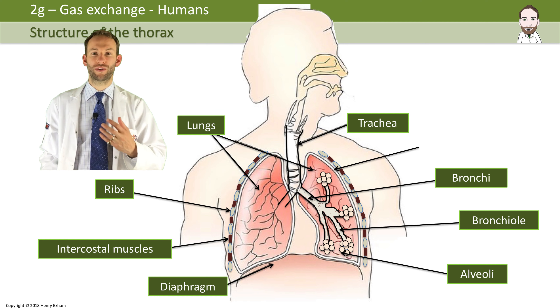Surrounding the whole chest cavity — the thorax — are the pleural membranes, which make a complete airtight seal. This is really important, and they also provide lubrication so that there's no friction when you're breathing in or out. This summarizes the major structures and their functions in the lungs.